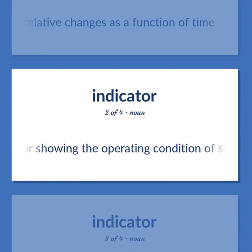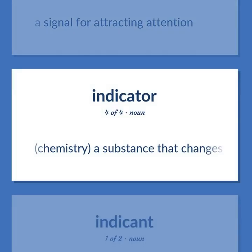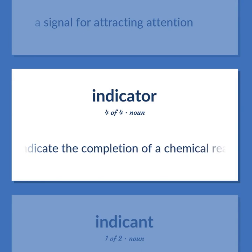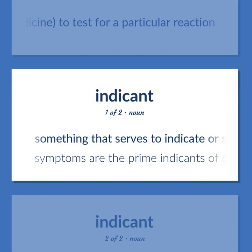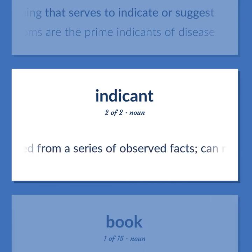Indicator: A device for showing the operating condition of some system. A signal for attracting attention. Chemistry: A substance that changes color to indicate the presence of some ion or substance; can be used to indicate the completion of a chemical reaction or, in medicine, to test for a particular reaction. Something that serves to indicate or suggest — symptoms are the prime indicants of disease. A number or ratio; a value on a scale of measurement derived from a series of observed facts that can reveal relative changes as a function of time.